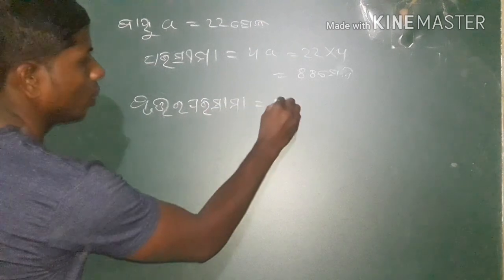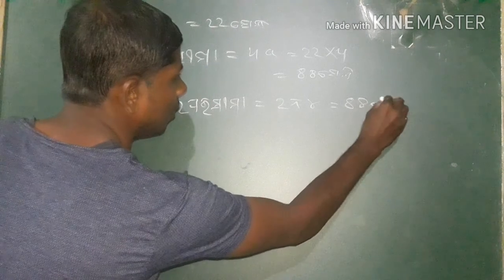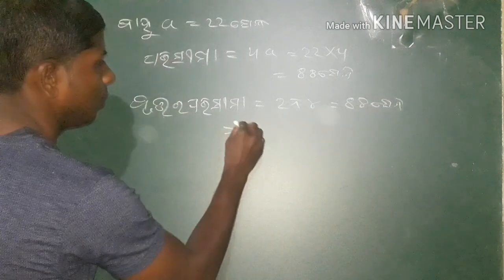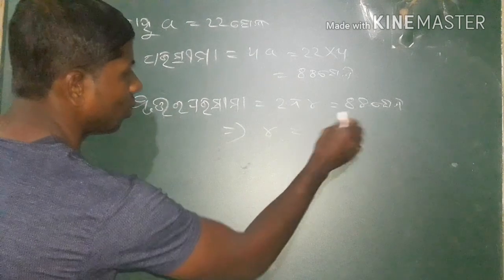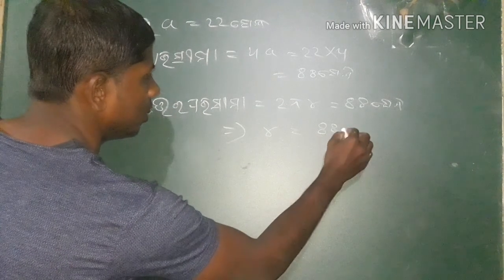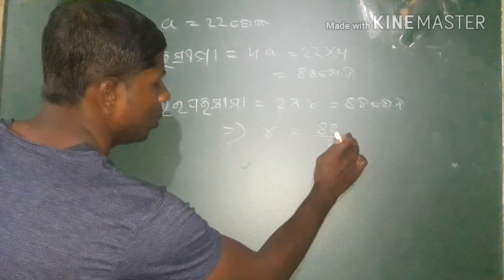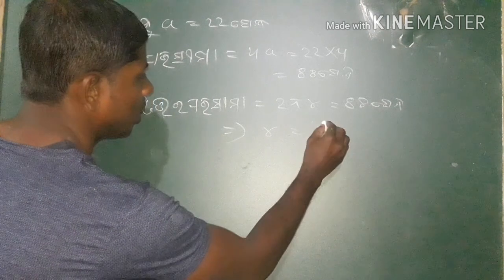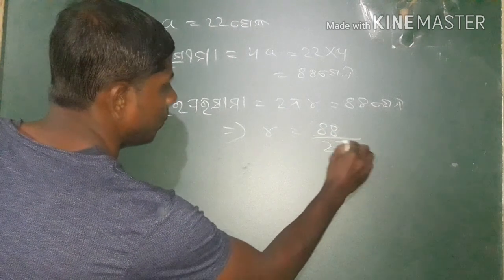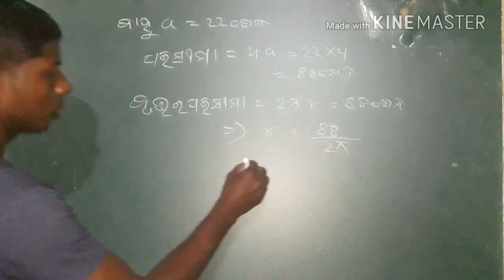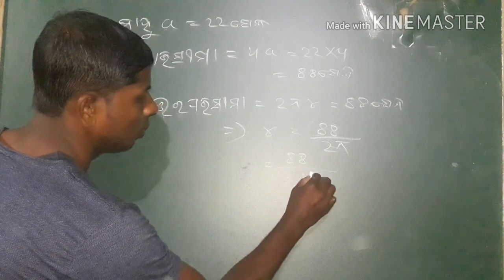2 pi is equal to 88 cm to 8 cm. 88 cm is equal to 2 cm. 88 cm is equal to 2 cm.